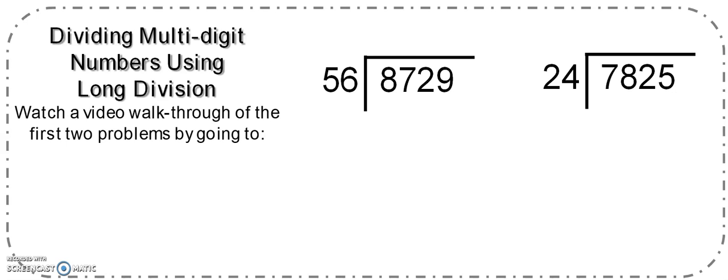The first problem we have is 8729 divided by 56. First we need to ask ourselves, if I've got 56, how many groups of 56 can I make using my first digit, which is 8? Well, I can't make any groups of 56 using just 8, so I'm going to go next door and grab the next digit.